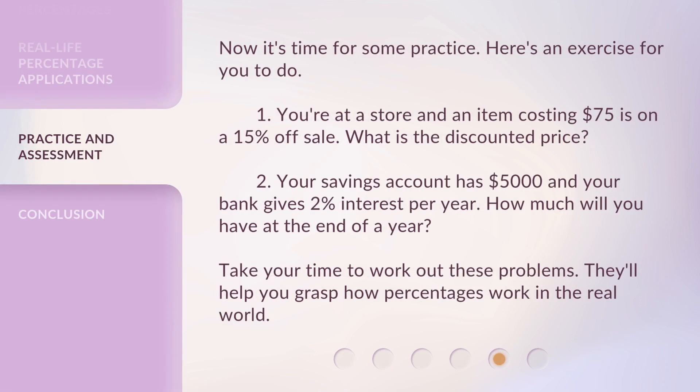Now it's time for some practice. Here's an exercise for you to do. Number one: you're at a store and an item costing $75 is on a 15% off sale. What is the discounted price? Number two: your savings account has $5,000 and your bank gives 2% interest per year. How much will you have at the end of a year? Take your time to work out these problems — they'll help you grasp how percentages work in the real world.